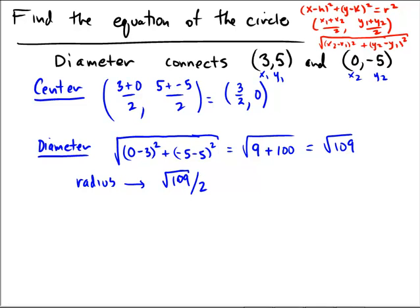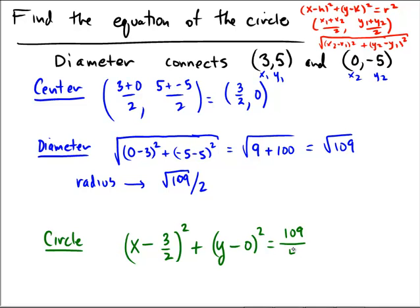Now taking those two pieces of information together, we can get the equation of the circle. The circle is going to be x minus the center's x coordinate, which is 3 halves squared, plus y minus 0 squared. That equals the radius squared, so square root of 109 squared over 2 times 2, which is 4.